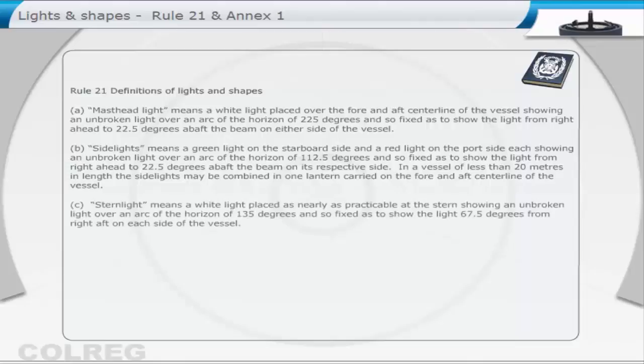Stern light means a white light placed as nearly as practicable at the stern, showing an unbroken light over an arc of the horizon of 135 degrees, and so fixed as to show the light 67.5 degrees from right aft on each side of the vessel.